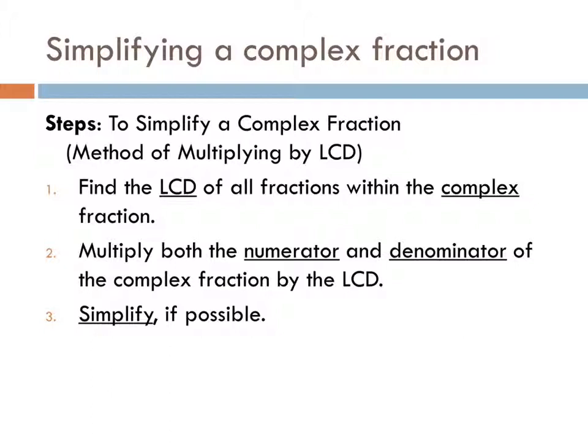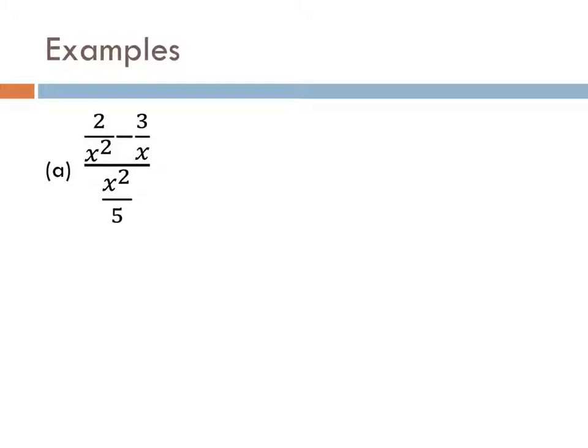Here's an example. Do we agree that this is a complex fraction? It's a fraction and it looks complicated. How many little denominators do we see? Three — we've got the x squared, the x, and the five. We need to find a single LCD for all three of these. What would be the LCD for x squared, x, and five? Five x squared.